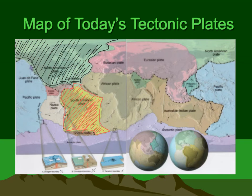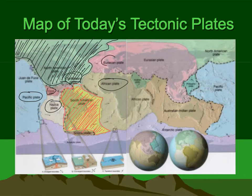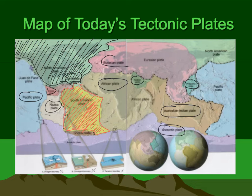The North American plate also includes the Arctic Ocean seafloor. There's the Pacific plate, the Nazca plate, Cocos plate, the Caribbean plate, African plate, a Eurasian plate, Arabian plate, the Australian Indian plate, the Philippine plate, the Antarctic plate, and the small Juan de Fuca plate. Also the Scotia plate down near the southern tip of South America.